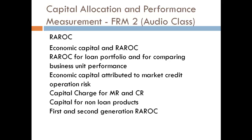Many banks use the RAROC approach to allocate economic capital by calculating RAROC for a business unit or product and comparing it to a preset RAROC hurdle rate. Only projects providing an RAROC above the hurdle rate make a positive contribution to shareholders. Under traditional RAROC — also known as first-generation RAROC — the RAROC for a business is compared to the firm's cost of equity. If RAROC exceeds the cost of equity, it is concluded that the business adds value to the firm.